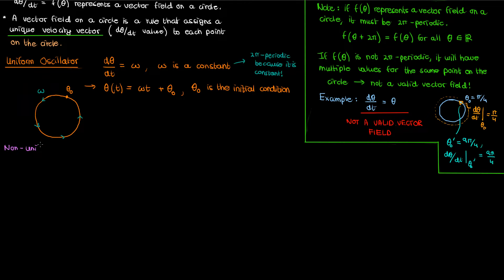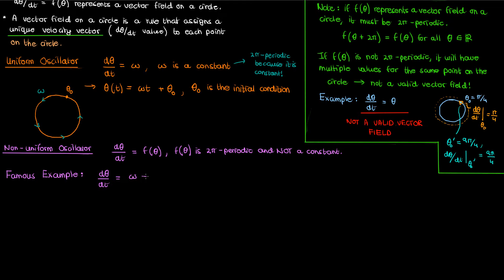The next important flow on a circle is the non-uniform oscillator. Broadly speaking, it involves a dynamical system representing flows on a circle but with a non-uniform rate of change given by f(θ), where f is not a fixed constant — though it still must be 2π-periodic. A famous example is f(θ) = ω − a·sin(θ), where ω and a are constants. We'll analyze this for the case where a is non-negative and ω is positive.